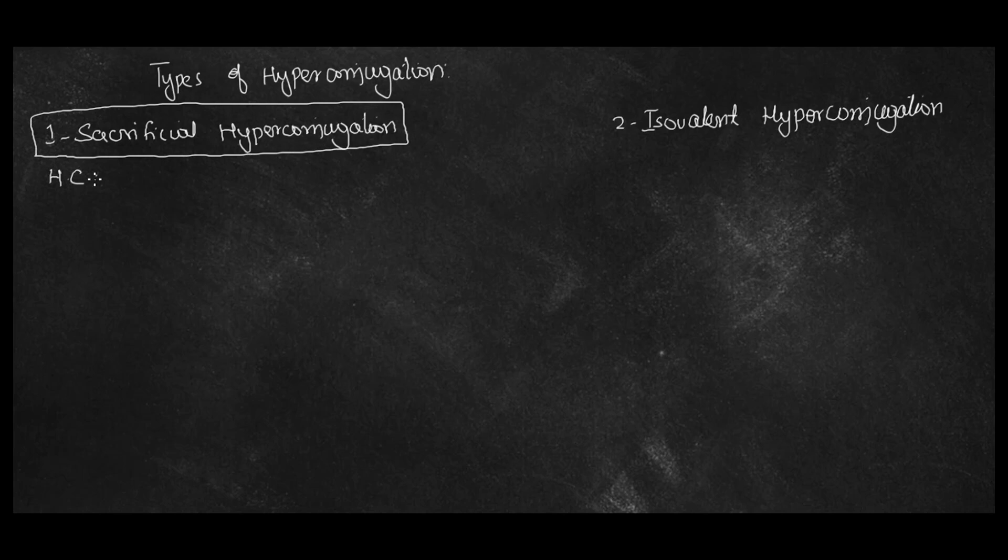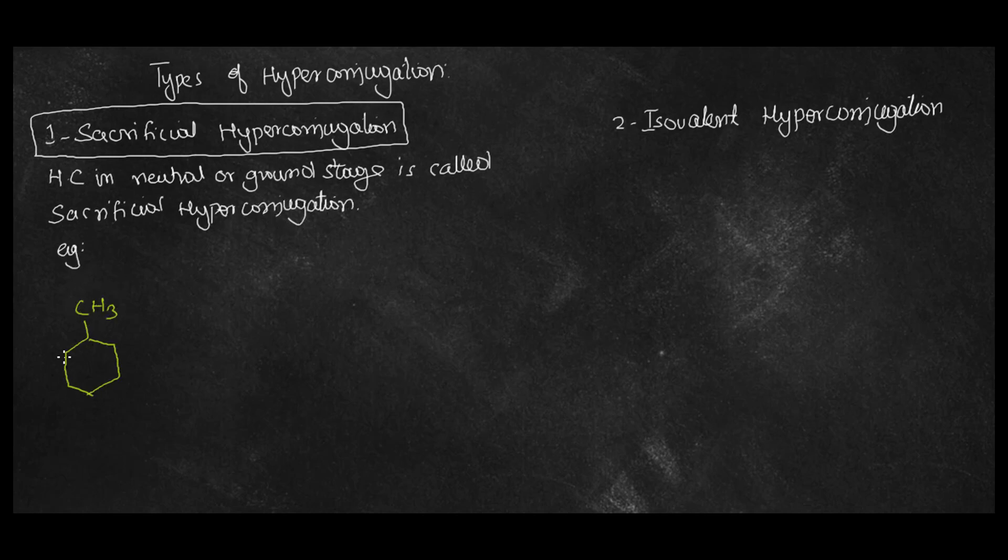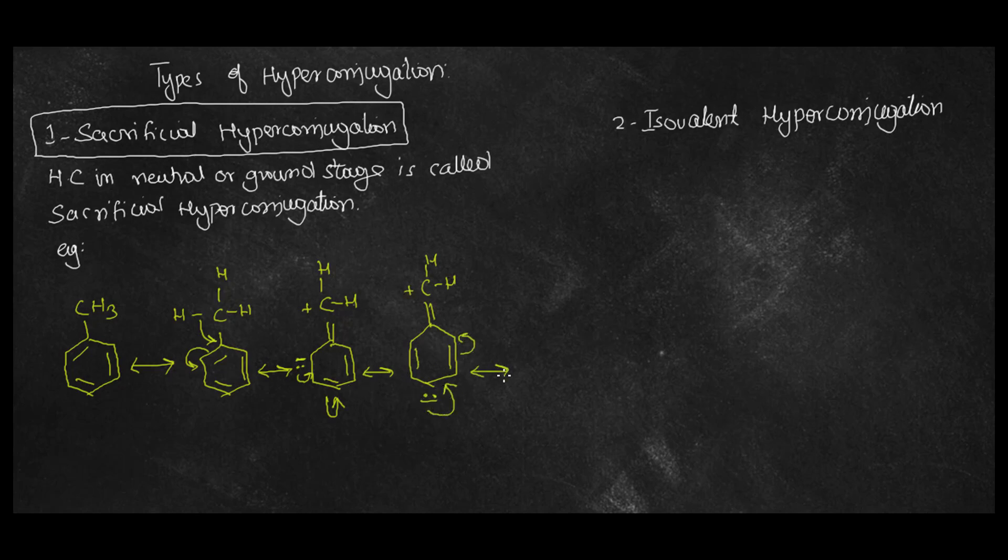Sacrificial hyperconjugation. Consider the example of this methylbenzene or toluene. This is the example of sacrificial hyperconjugation, showing how the sigma bonds are moving along the system in CH3, how this bond delocalizes and how the delocalization of the benzene ring occurs, and which is the condition where the negative and positive charge get displaced. This is termed sacrificial hyperconjugation.